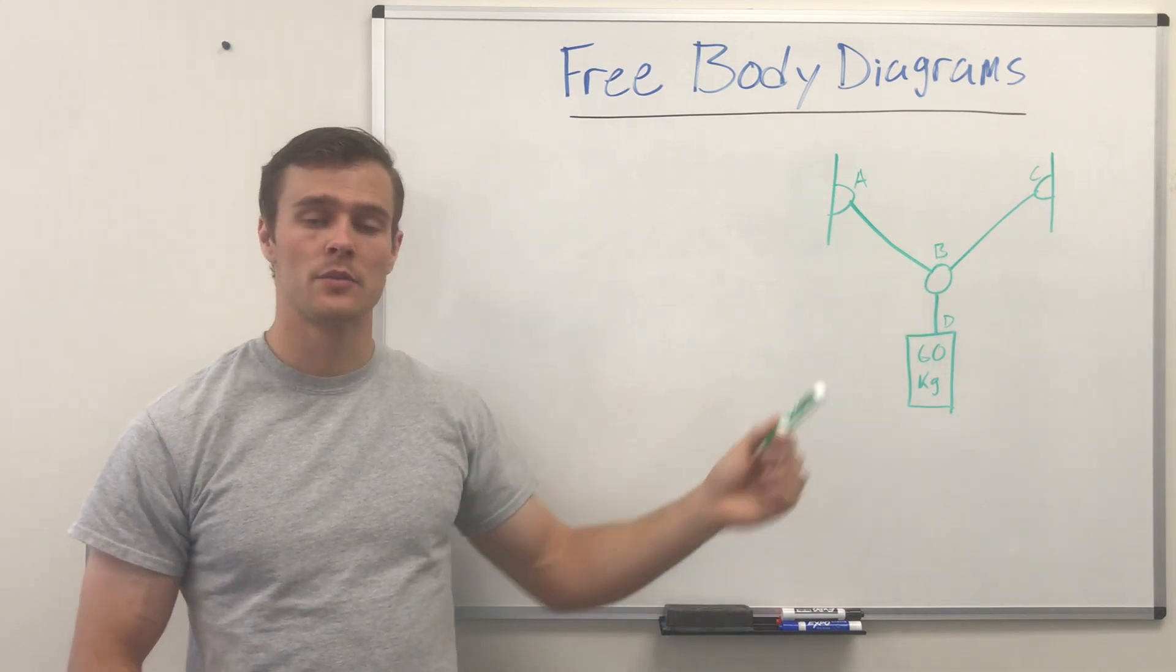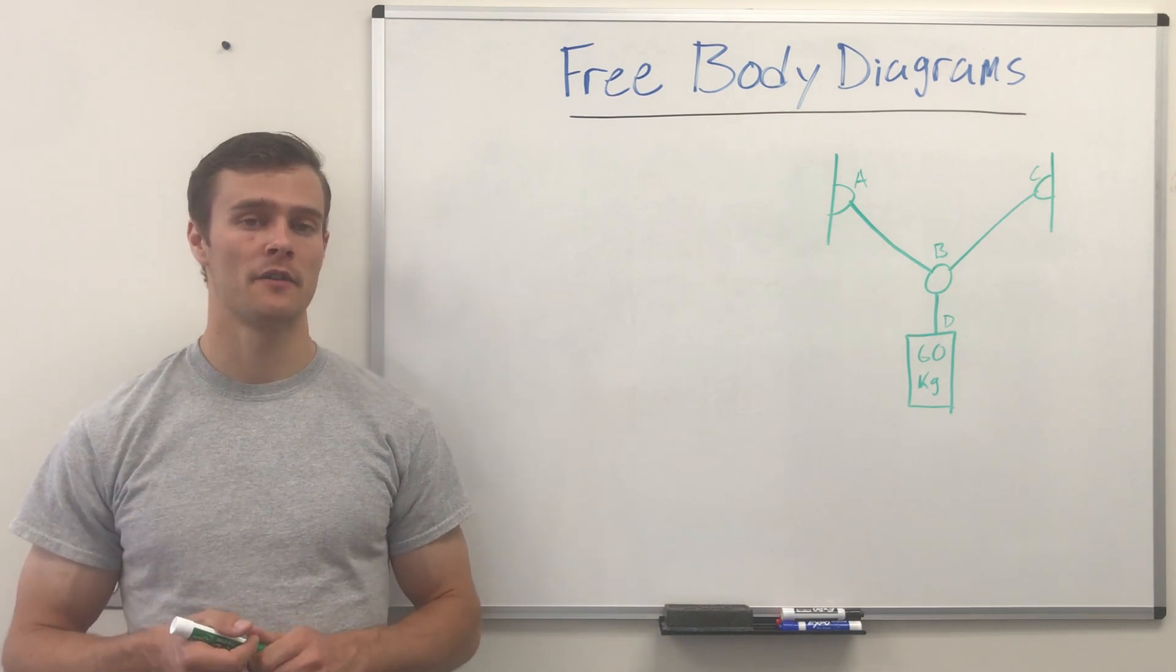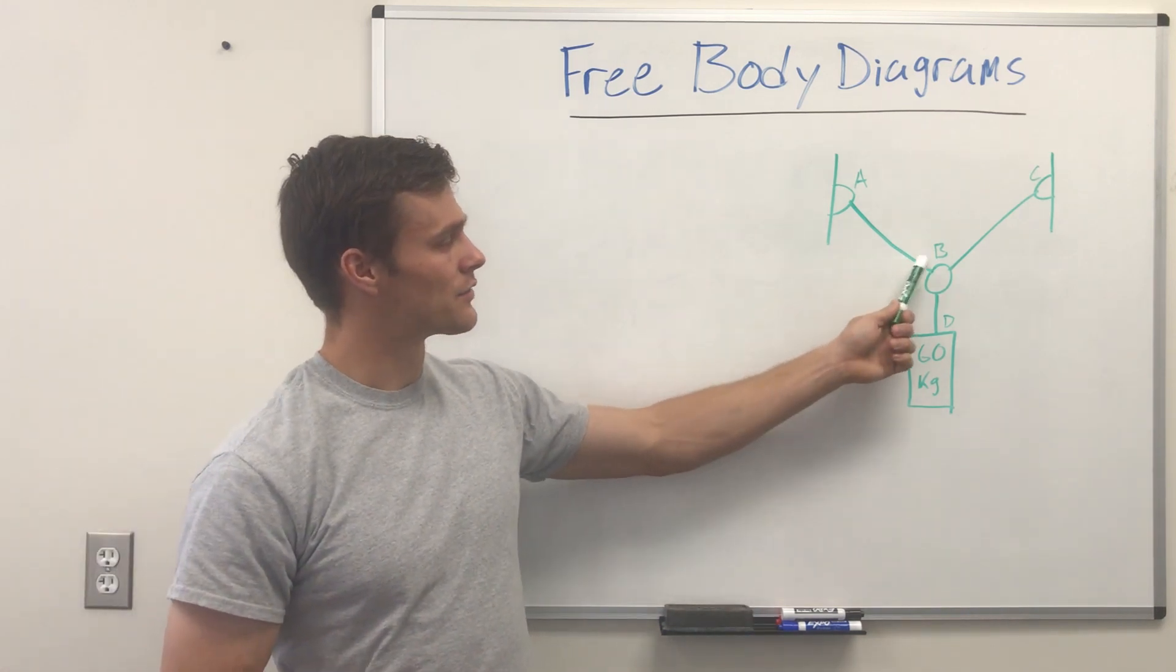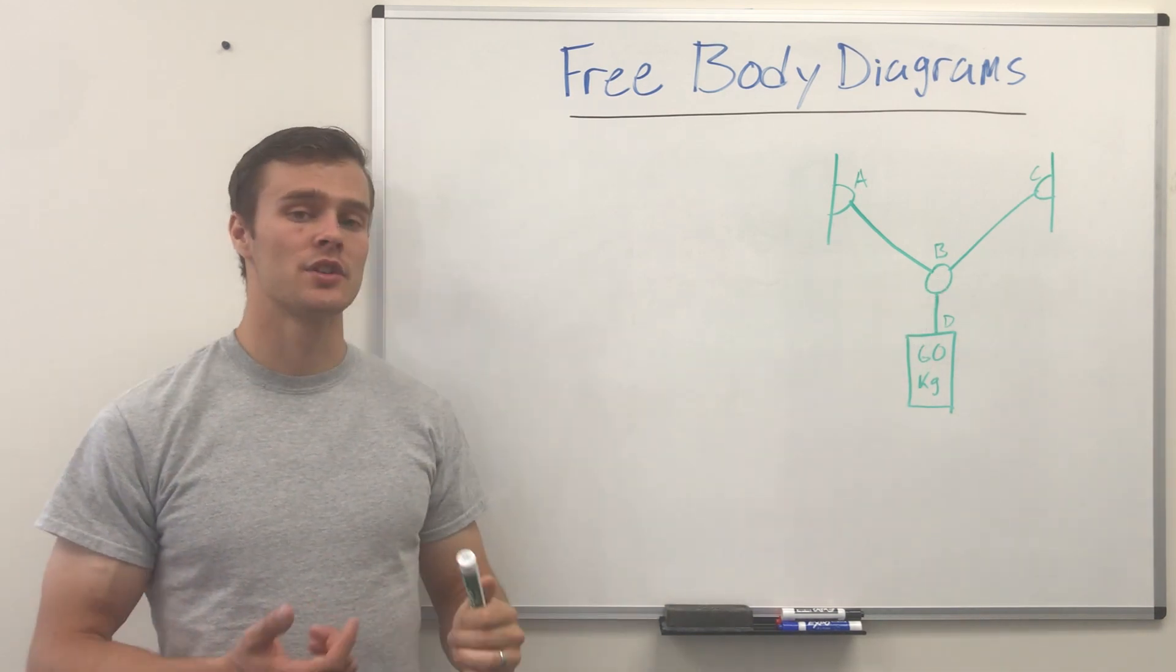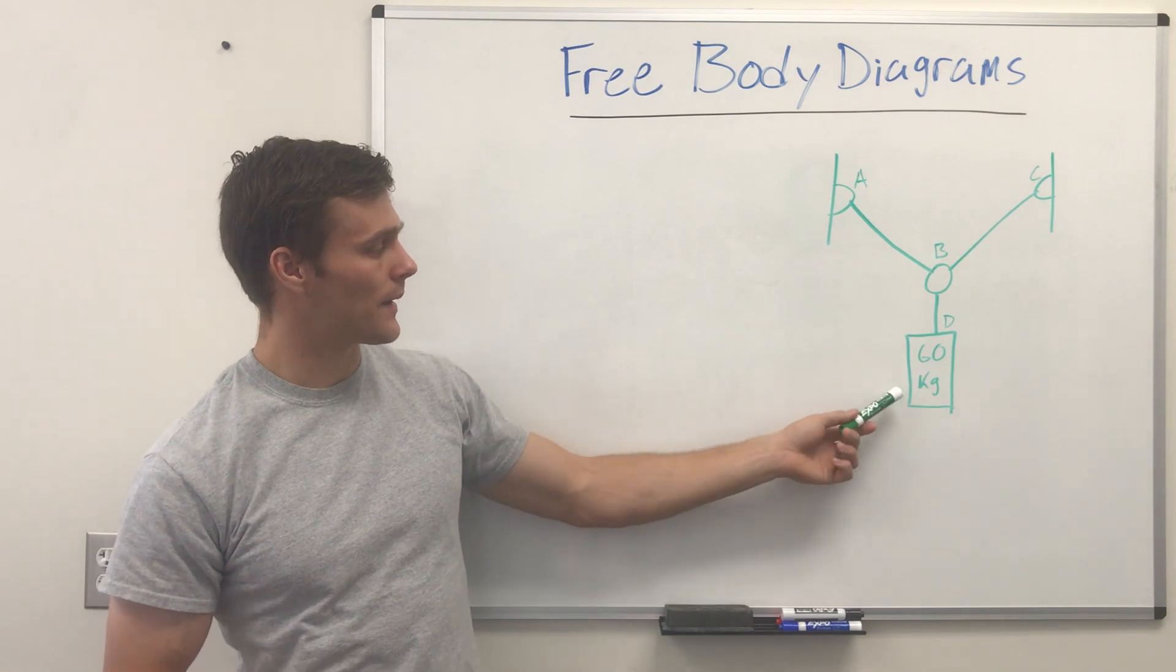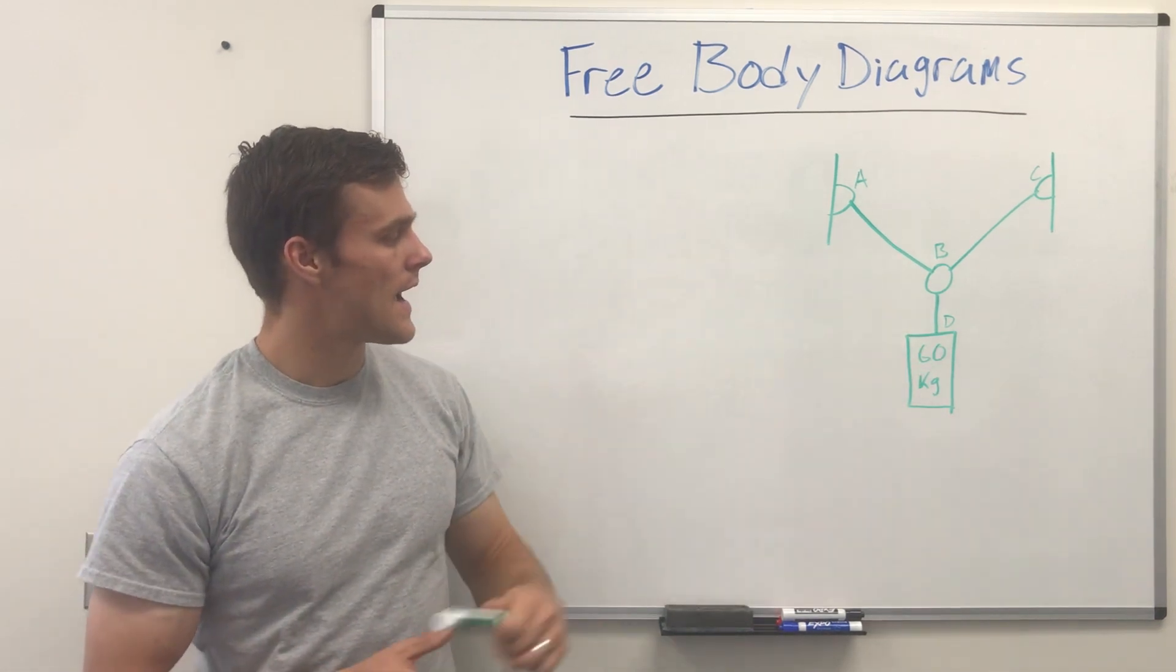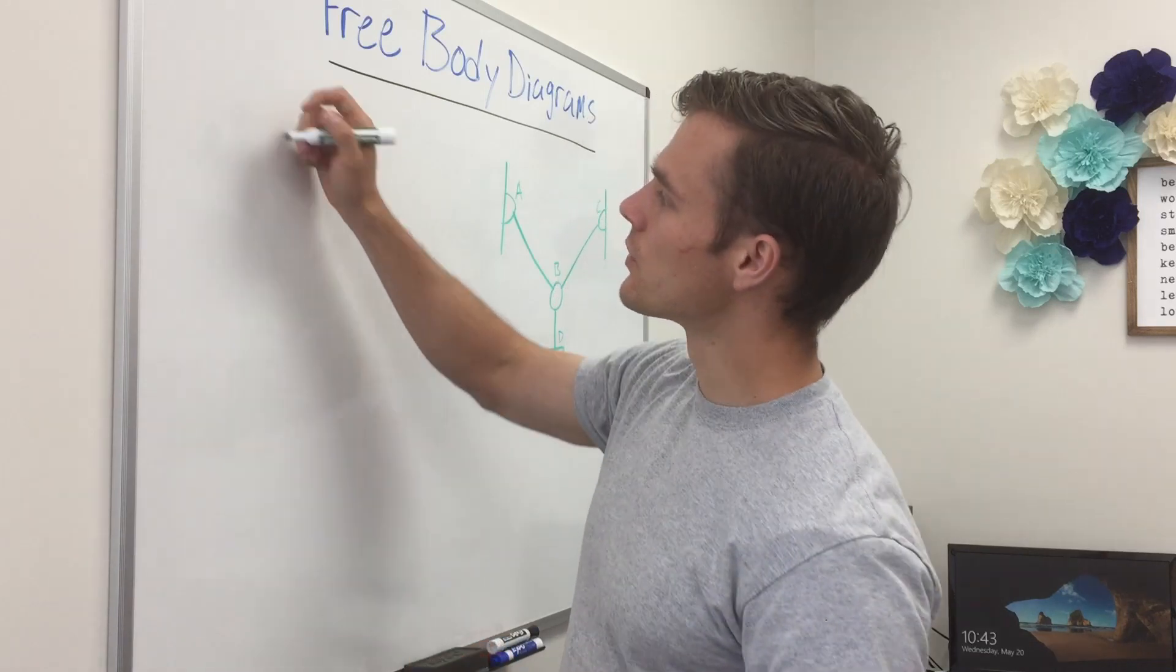But what you draw the free body diagram of depends on what you're interested in finding. So say if we're wanting to find the tension in these ropes we're probably going to draw a free body diagram of this ring right here. If we just want to find the tension in this rope well we're probably just going to draw a free body diagram of the weight hanging down. So let's do that, let's draw two free body diagrams of both the ring and the weight.